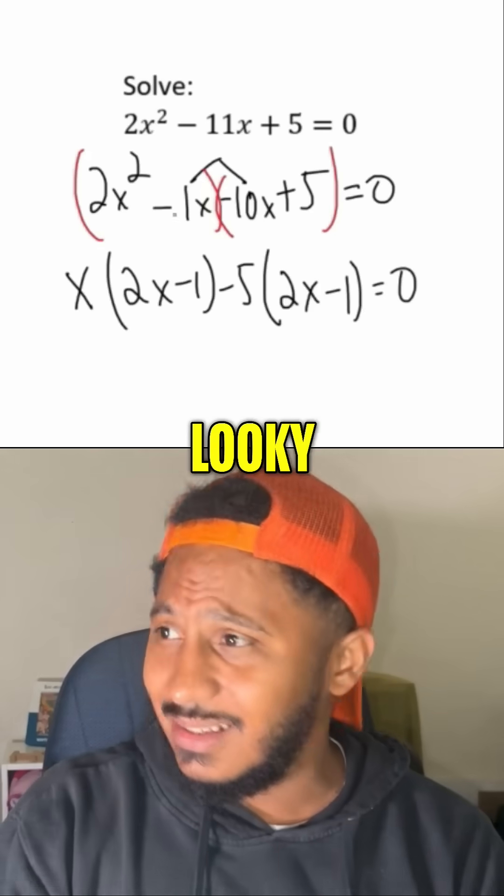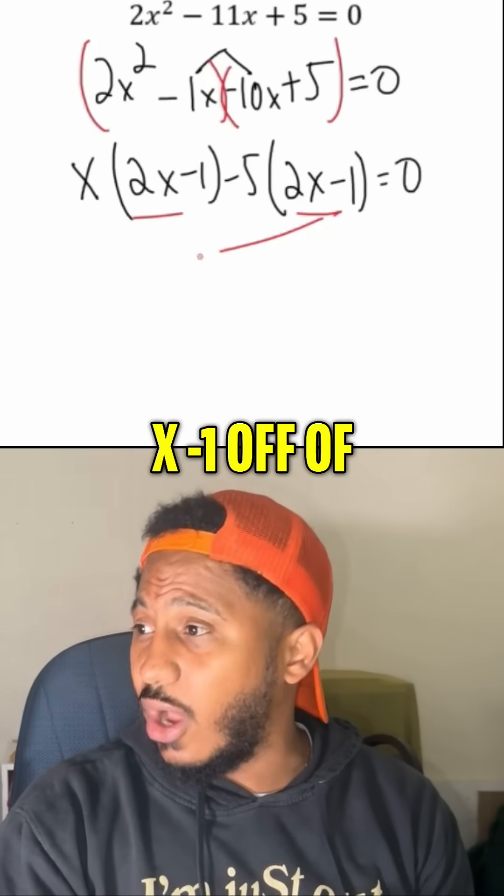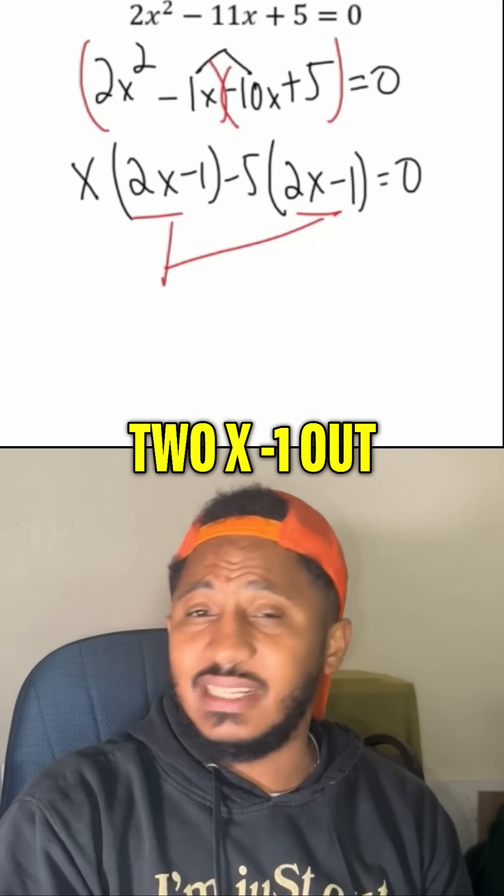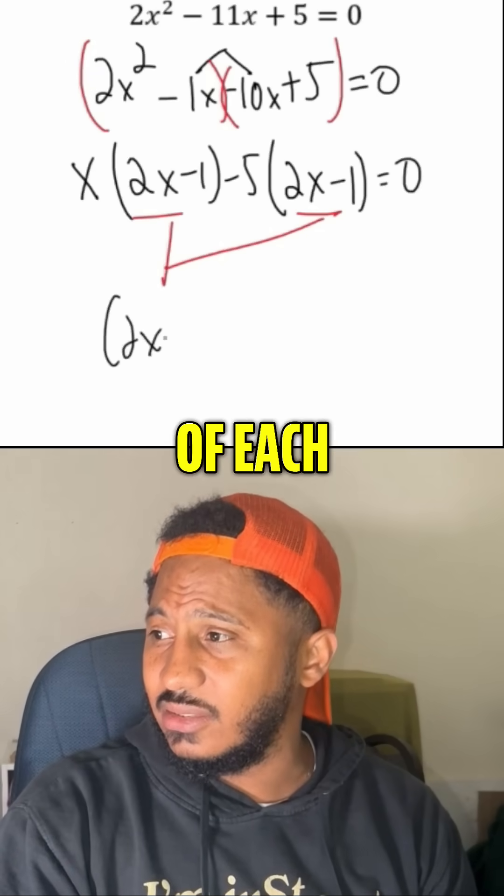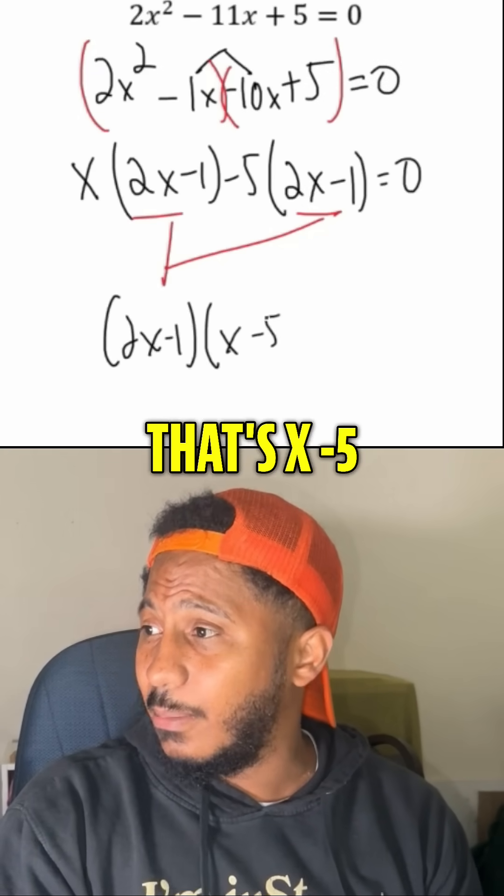And now look it, look it. They both got that 2x minus 1 in common. So pull the 2x minus 1 off of each. If I take a 2x minus 1 out of each, what's left is just the parts in front. That's x minus 5. Got it.